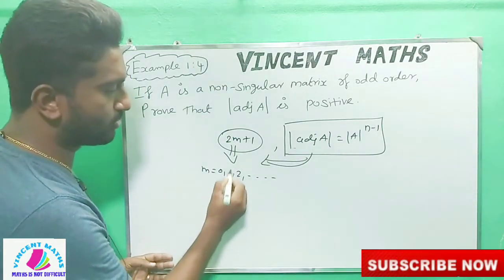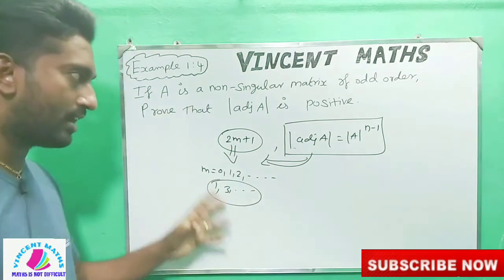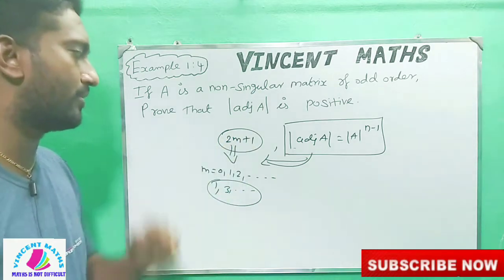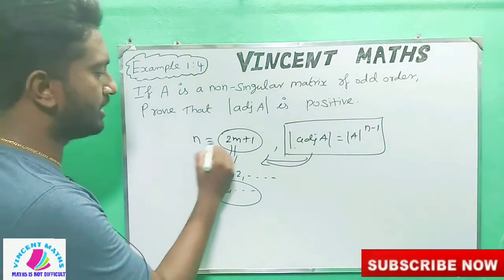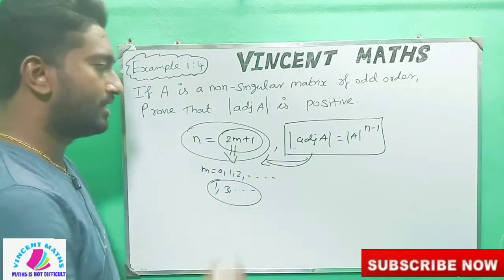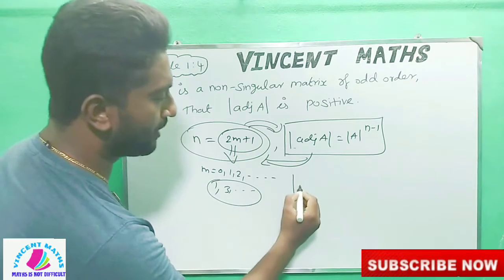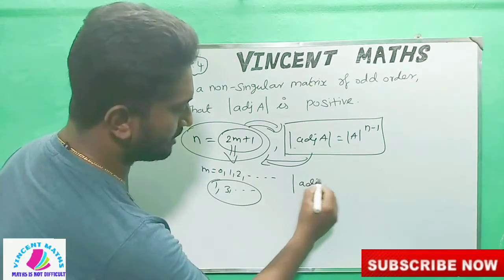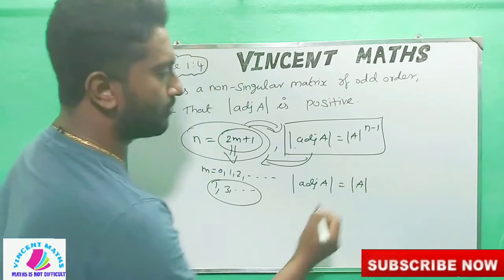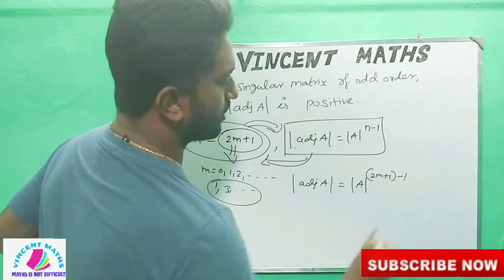What do I need to substitute — we should be 1. Now substitute 3. This is odd order. General term is 2m plus one. So what we can do is n equal to here. Then n equal to 2m plus 1.